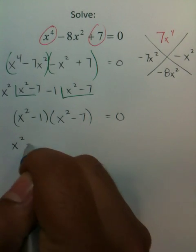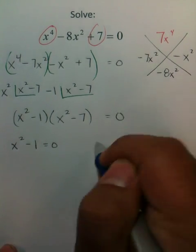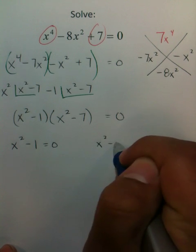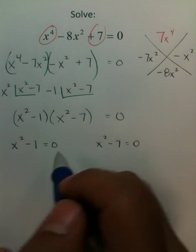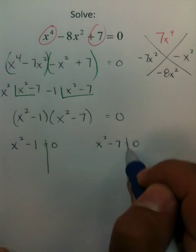I'm going to use a different technique, actually. I'm going to make this equal 0, and I'm going to make this equal 0. This is called the zero product rule. It's a perfectly legal rule. And all you have to do is solve for each one of these individually.